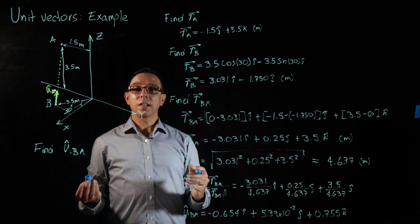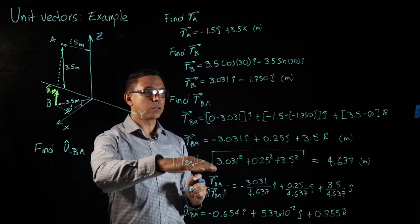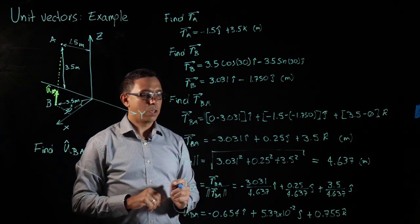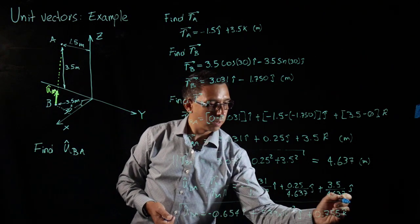I'm not forgetting units. Yes. Unit vectors are unitless because we are dividing units of meters over units of meters. So it gives me unitless. And this will be my final answer.